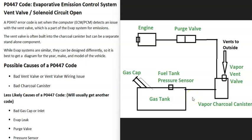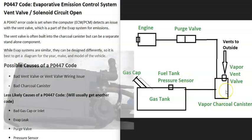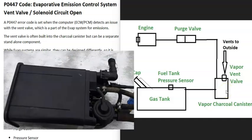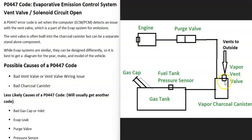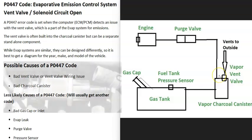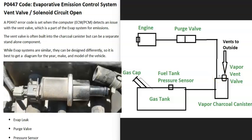The basics of how all these EVAP systems work is that the gas vapors are going to leave the gas tank, go through a hose over to what's called a charcoal canister. The charcoal canister is kind of like storage for the gas vapors. Either built into the charcoal canister or located right next to it is going to be what's called a vent valve.